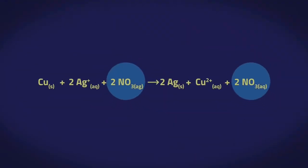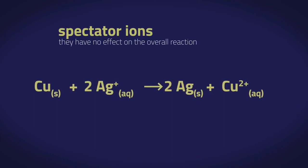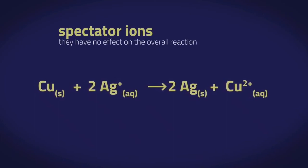What about those nitrate ions in the original equation? As the nitrate ions appear on both sides of the equation, they are called spectator ions, as they have no effect on the overall reaction, much like spectators in a football match have no effect on the final result of the game.